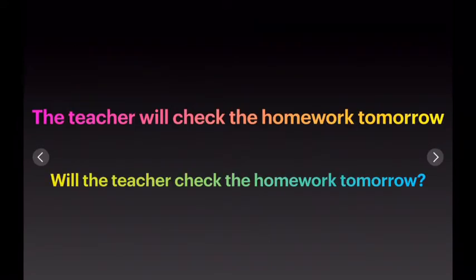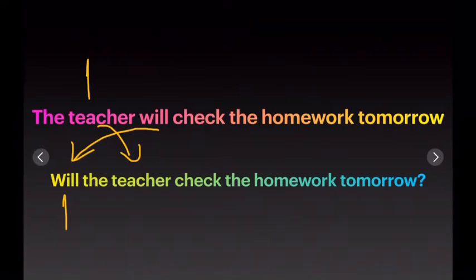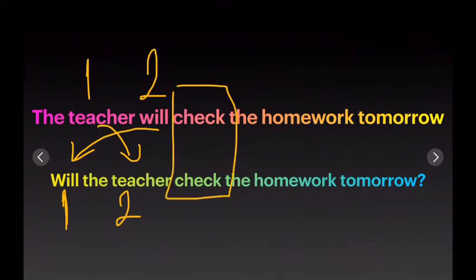Now, the only thing that we have to do is to turn 'will' to the first place and the subject to the second. In the positive form, in the first place is the subject and in the second you have 'will.' Here in the question, we have 'will' in the first and the subject in the second. So we have to switch the auxiliary and the subject. The verb stays in the same place.